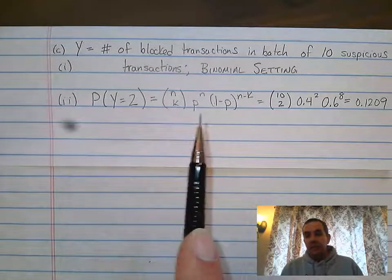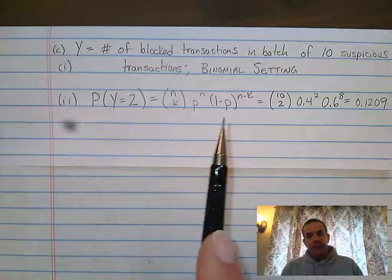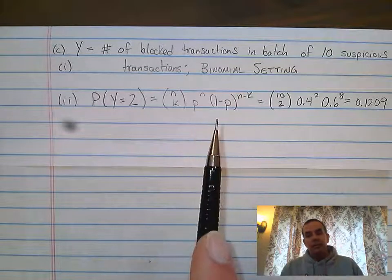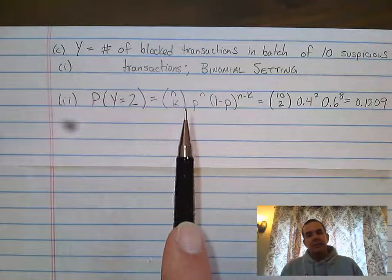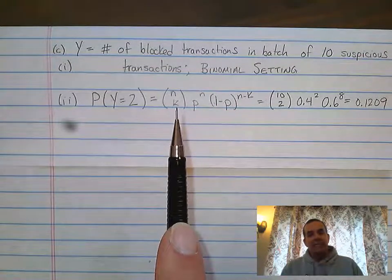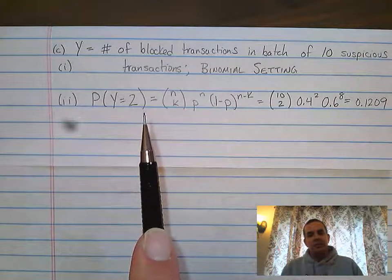This formula is on your formula sheet. The binomial PDF formula is there on your formula sheet. It's n choose k. This is your binomial coefficient. How many ways can you get two successes out of 10?